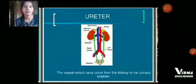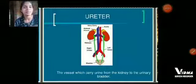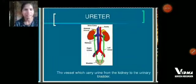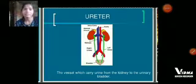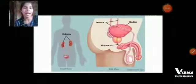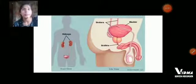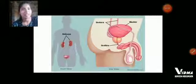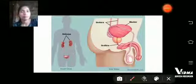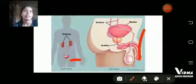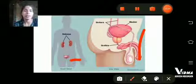The ureters — left and right — are the vessels which carry urine from the kidney to the urinary bladder. The urinary bladder is elastic in nature and stores urine. Here we see the front view and the side view of the urinary bladder.